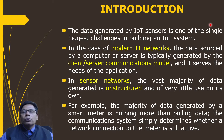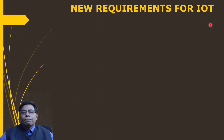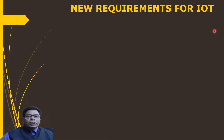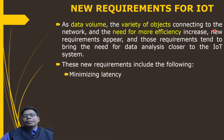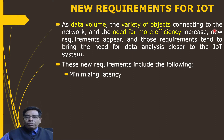As data volume, the variety of objects connecting to the network, and the need for more efficiency increase, new requirements appear. These requirements tend to bring the need for data analysis closer to the IoT system. The first new requirement is minimizing latency — milliseconds matter for many types of industrial systems, such as when trying to prevent a manufacturing line shutdown or restore electrical service. Analyzing data close to the device that collected it can make the difference between averting disaster and a cascading system failure.